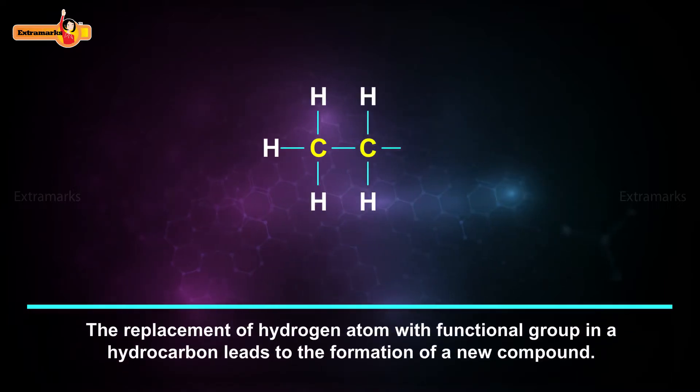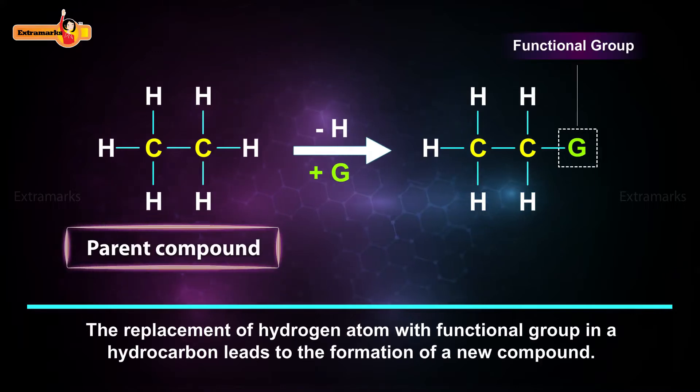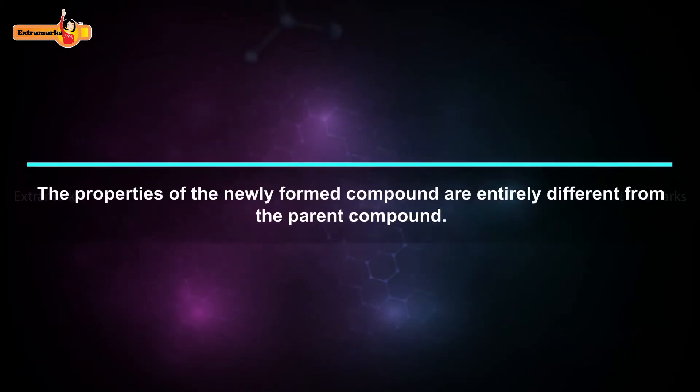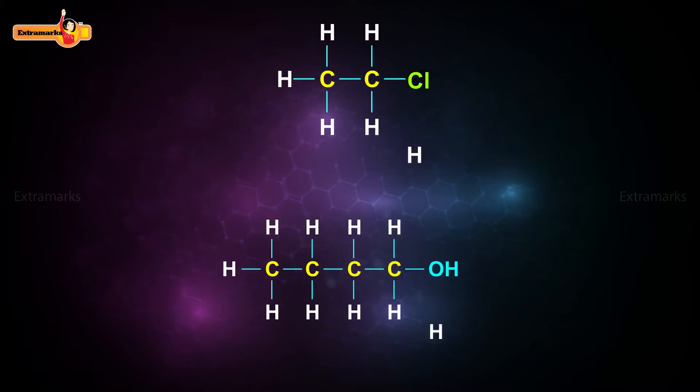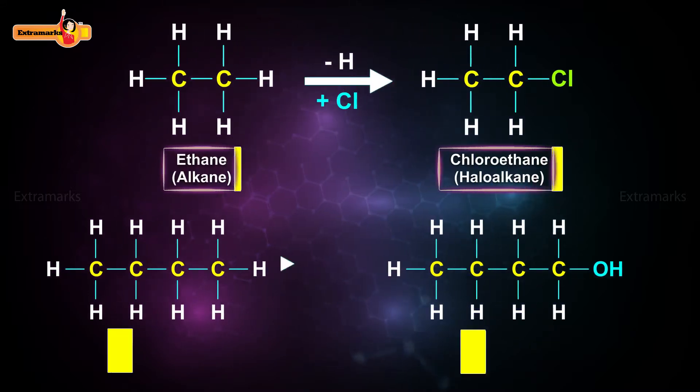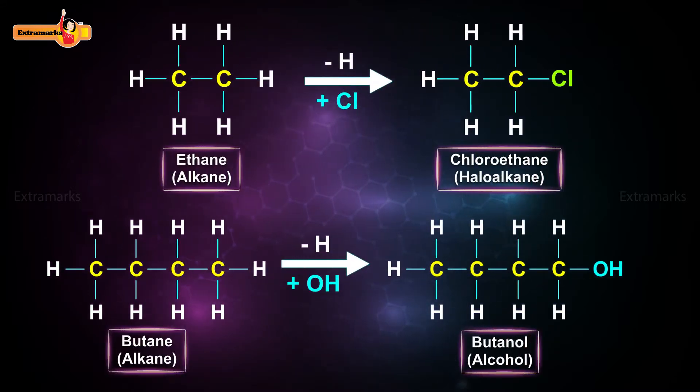The replacement of hydrogen atom with functional group in a hydrocarbon leads to the formation of a new compound. The properties of the newly formed compound are entirely different from the parent compound. For example, the properties of chloroethane and butanol are entirely different from their parent compounds, ethane and butane respectively.